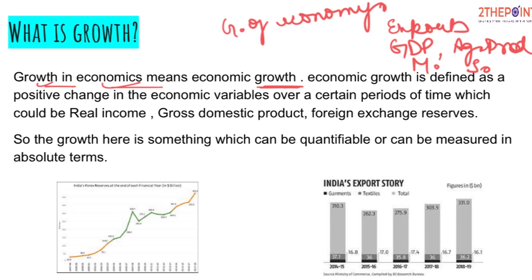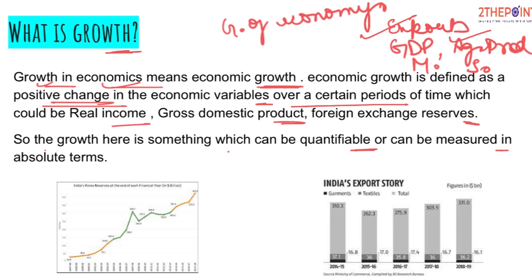Economic growth is defined as a positive change in economic variables over a certain period of time — which could be real income, GDP, foreign exchange reserves, exports, or agriculture production. Anything which is an economic variable that is growing represents positive growth. Importantly, growth is something which can be quantified or measured in absolute terms.